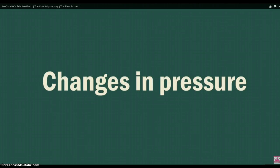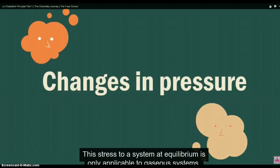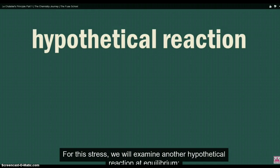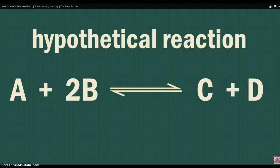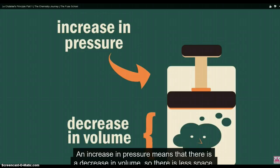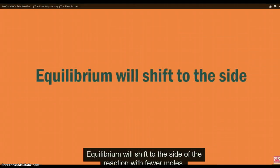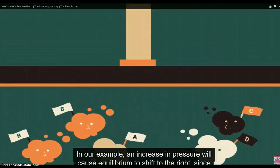Changes in pressure. This stress to a system at equilibrium is only applicable to gaseous systems. We will examine another hypothetical reaction at equilibrium, where reactant A reacts with two moles of reactant B to form product C and product D. An increase in pressure means that there is a decrease in volume, so there is less space. Equilibrium will shift to the side of the reaction with fewer moles. In our example, an increase in pressure will cause equilibrium to shift to the right, since there are fewer moles.